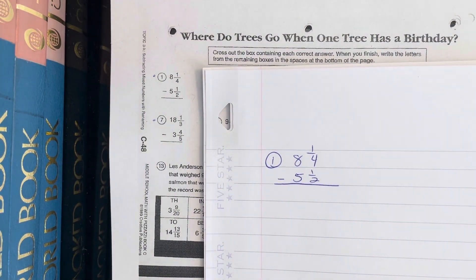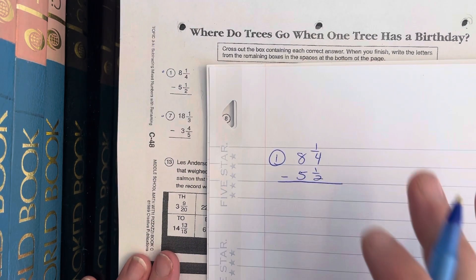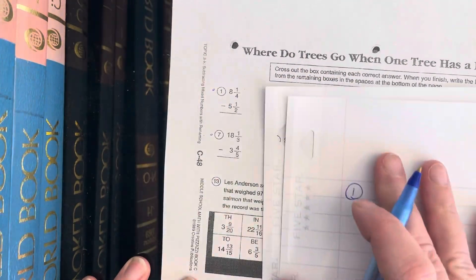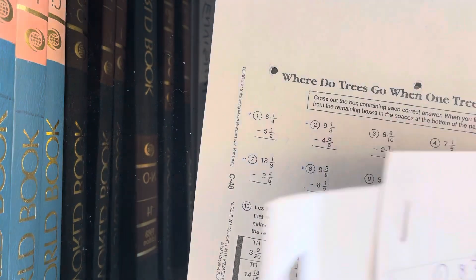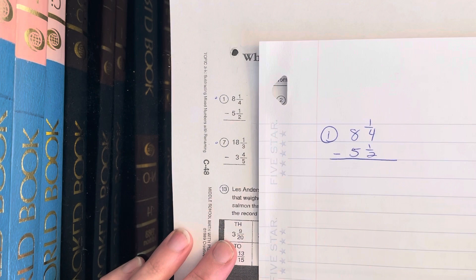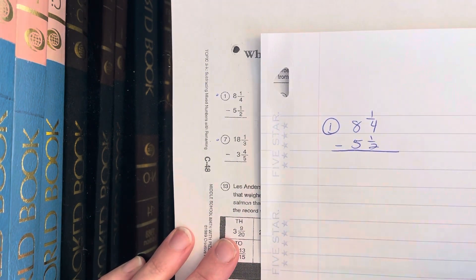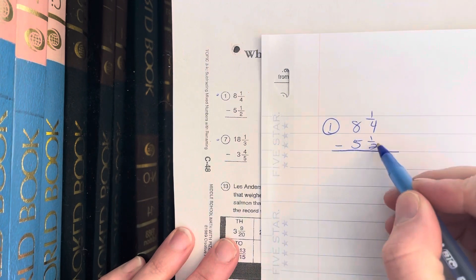Okay, where do trees go when one tree has a birthday? I'm going to do four problems from this worksheet. You can see I've already started here with number one. I've copied the problem down and I'm going to be working right here. 8 and 1/4 minus 5 and 1/2 - they do not have a common denominator.